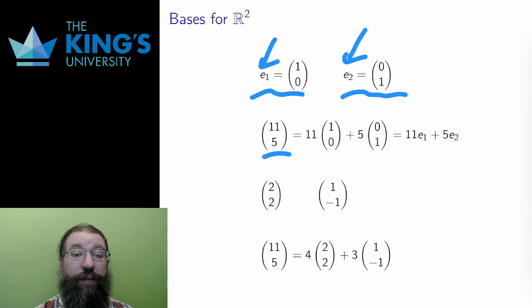(11,5) is 11 times E1 plus 5 times E2. Indeed, any vector is its first coordinate times E1 plus its second coordinate times E2. So all of ℝ² can be built from E1 and E2. E1 and E2 span ℝ², and they are linearly independent, so they form a basis.